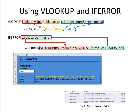Here we have a portion of our spreadsheet. We see that in cell B5 we have entered an ID of 1050. The VLOOKUP formula is in cell C7. Here's how this works: VLOOKUP — the first value, the lookup value — says go to cell B5 and find what ID number is there.